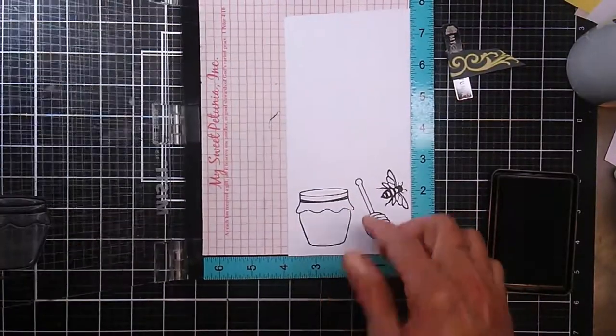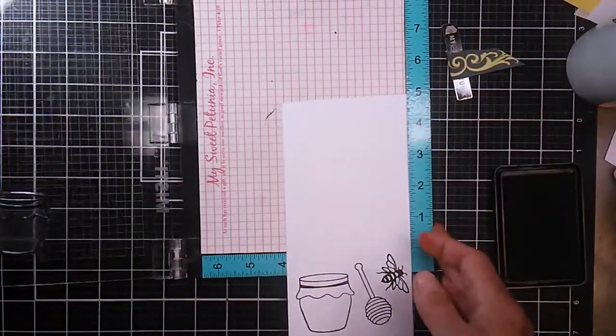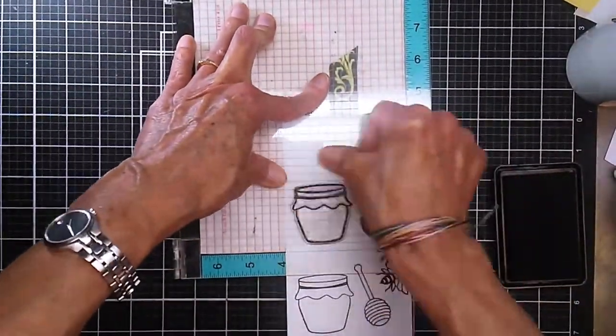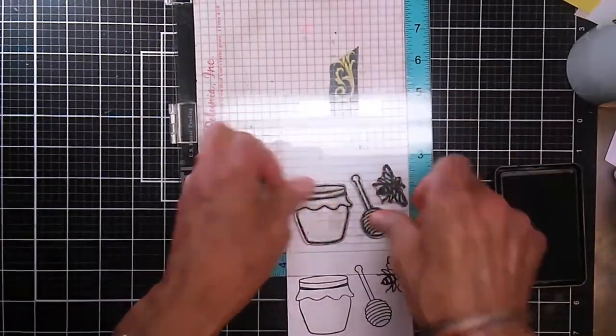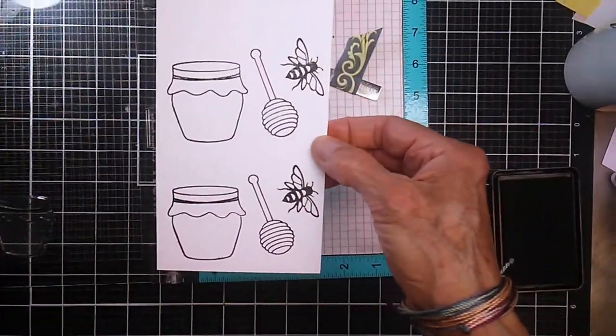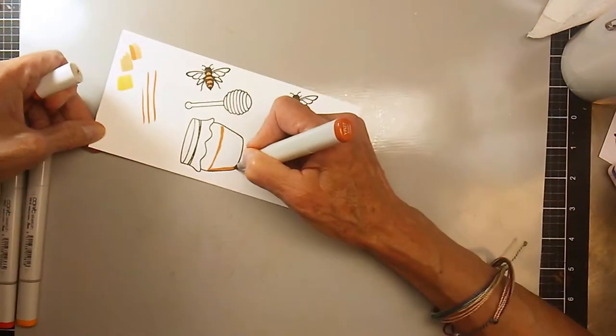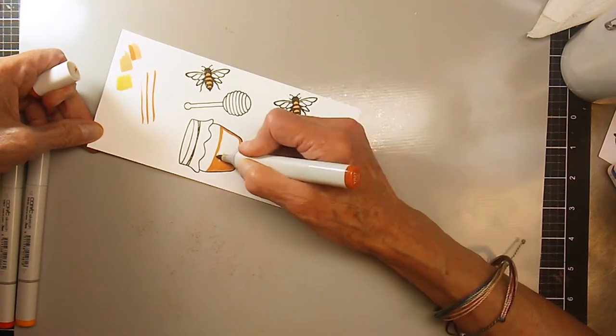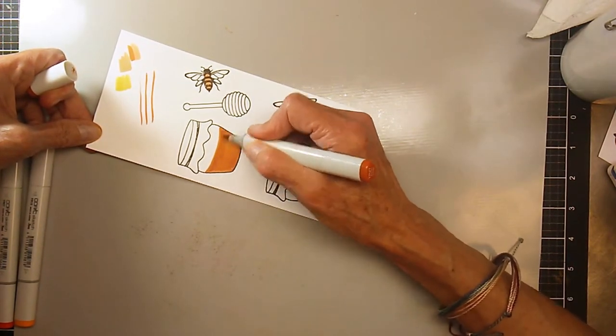I'm using that embossed background, so I needed to stamp some extra honey pots and applicators and lots of bees. I'm using Gina K because I intend to color it with my Copics. I just grabbed out honey appropriate colors here and colored the pot and the little tops.